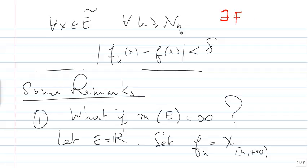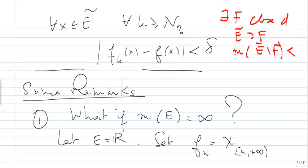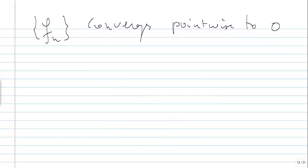So you can have the measure on capital F, and the measure of E minus F will be 2 epsilon. Therefore, having a measurable subset of E on which you have uniform convergence, you can approximate E-tilde by a closed set and still have uniform convergence. So, fixed epsilon positive, there exists F closed subset of R such that F_N converges uniformly to 0 on F and the measure of R minus F is less than epsilon.